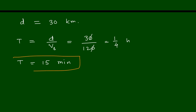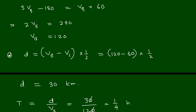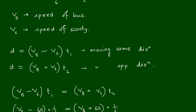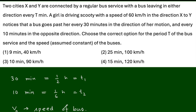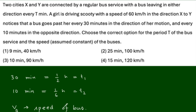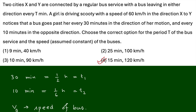There are two answers — the period T is 15 minutes and the bus speed is 120 km/h. Looking at the options, the correct option is option D. Thank you for watching. Please like, share, and subscribe for more videos.